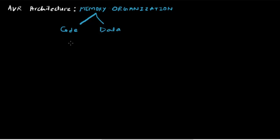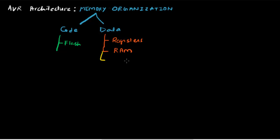The memory we have for code is called the flash, as we have seen in the previous video. For data, it can either be stored in the general purpose registers, simply called registers, or it could be stored in the RAM. If you want to store it permanently, there is one more type of memory called the EEPROM.